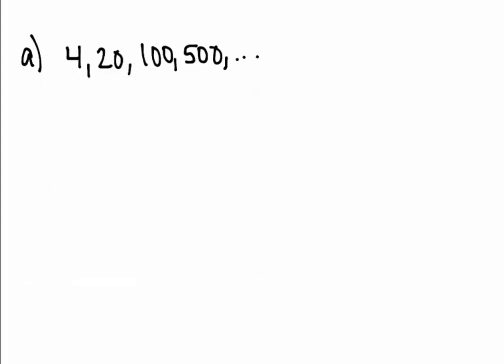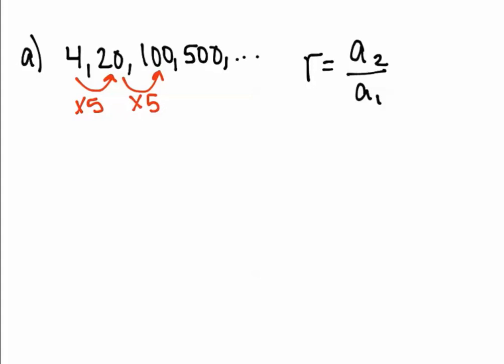Now we're going to look at the next example, part A: write a rule for the nth term of the sequence, then find A7. You have to find the common ratio from the given sequence. You can see each time we're multiplying by 5. Sometimes the common ratio isn't as clear, so you can find it by taking the second term divided by the first term — that always gives you your common ratio. Here, 20 divided by 4 equals 5.